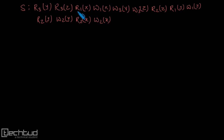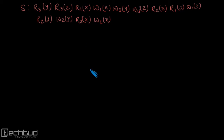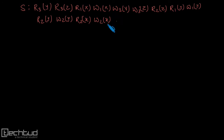Now, you can see that in this example or in this schedule I have modified this r1x instead of r1y which was there in the earlier schedule. So now we need to check quickly whether this given schedule is conflict serializable or not.